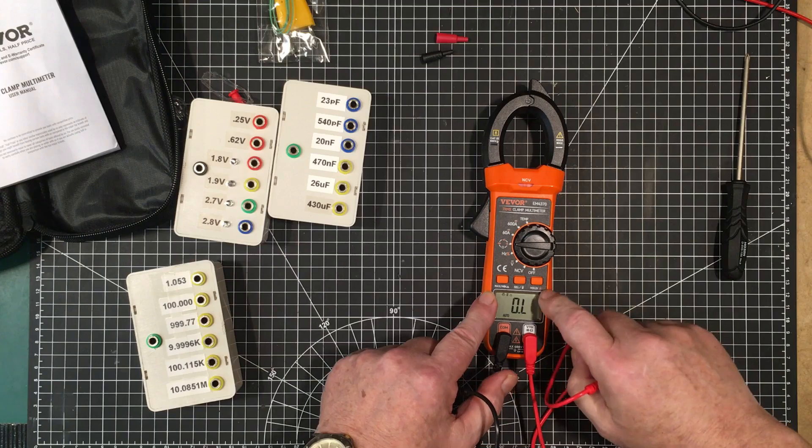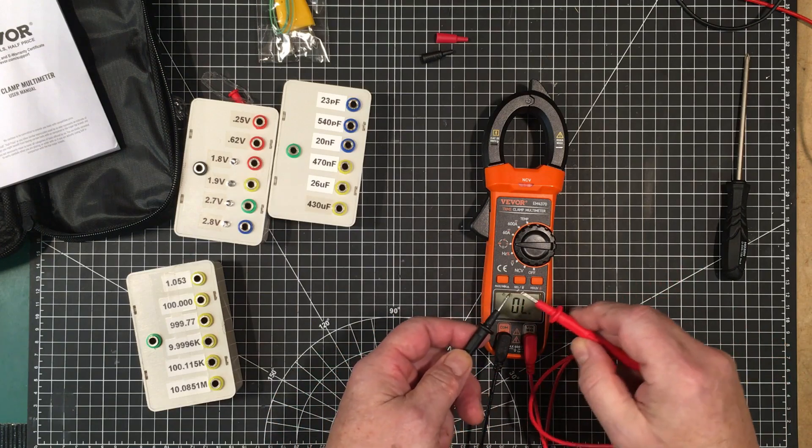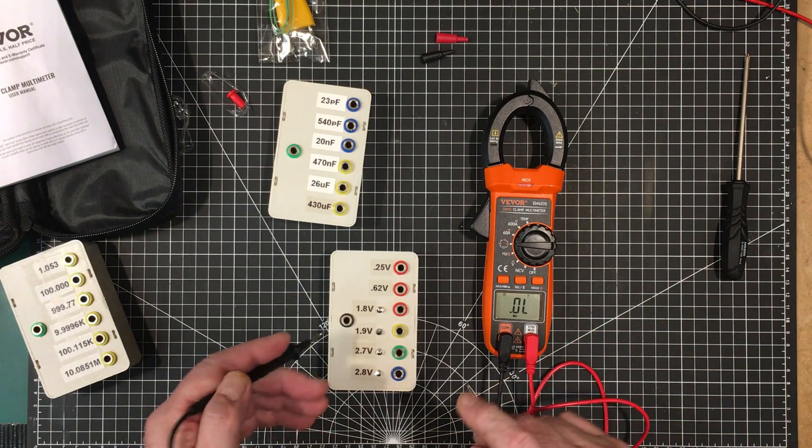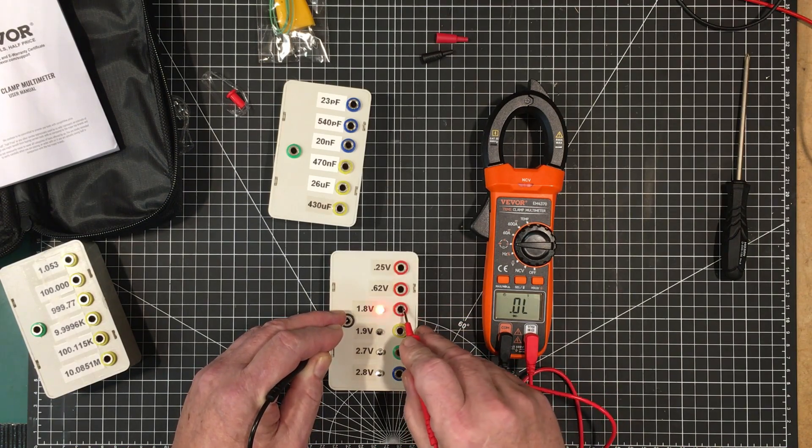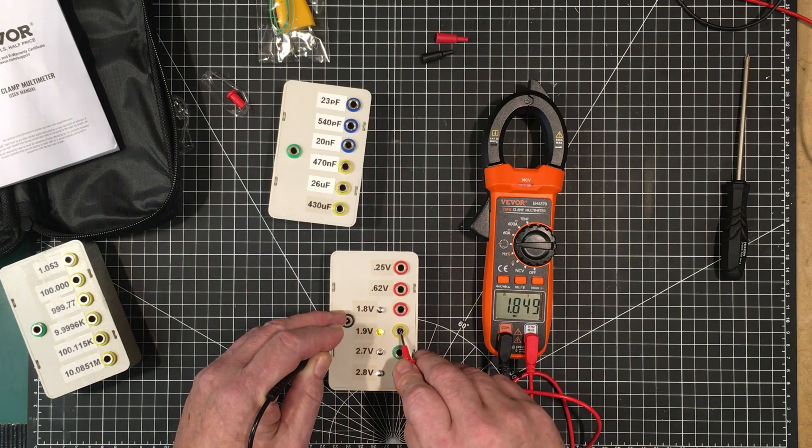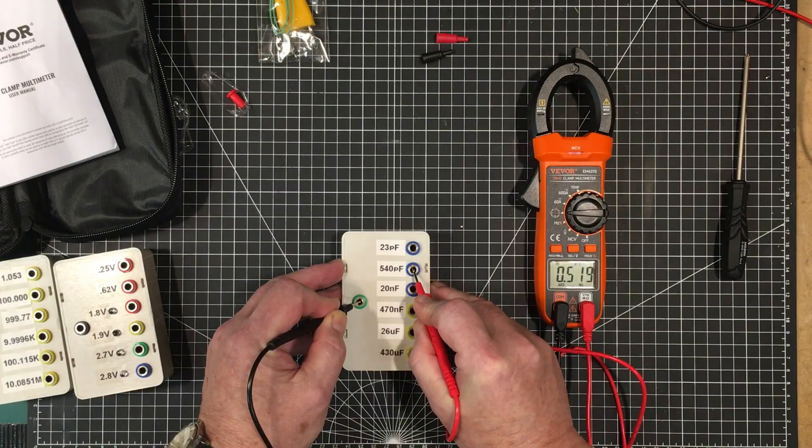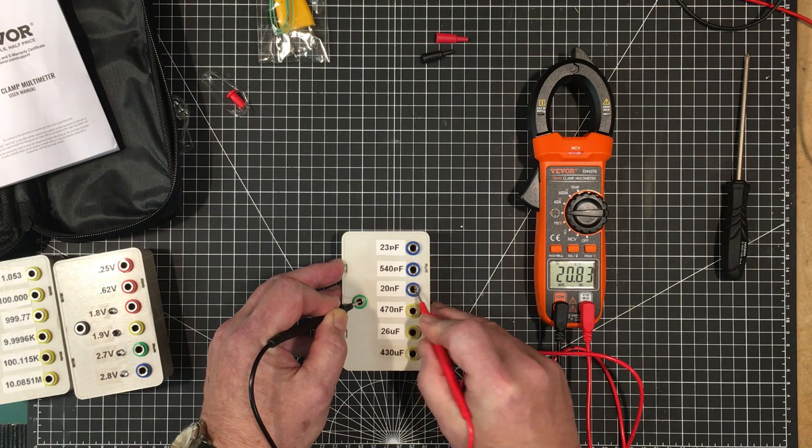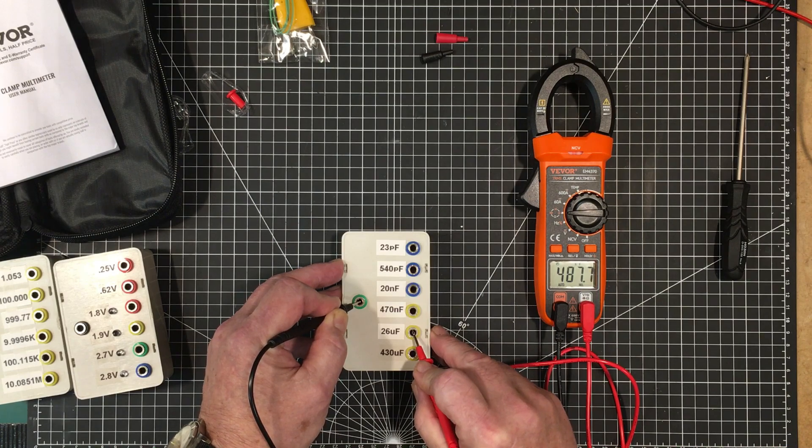So let's look at the continuity mode. It's immediate and it's latched. Very nice. And we'll try the diode mode. Schottky diode 2.56, right on. Red LED, green LED. It's in the ballpark. It lights up all the LEDs. It's doing the job it needs to do. Now capacitance. 540 nanofarads, 20 nanofarads. It's going to take a while. Yeah, it's accurate. It does the job.